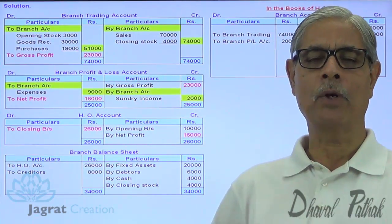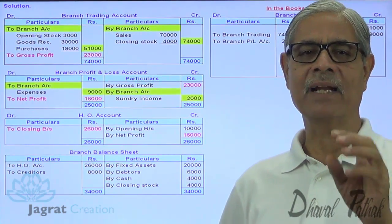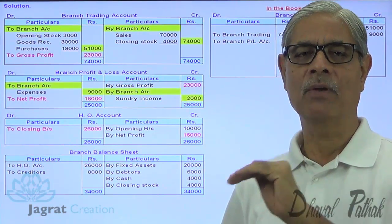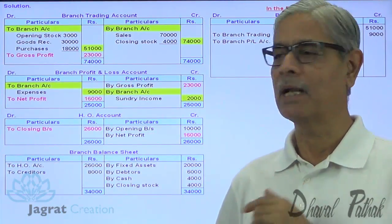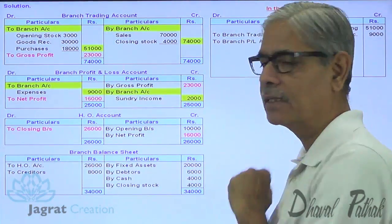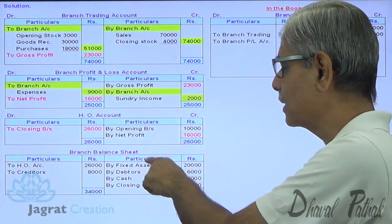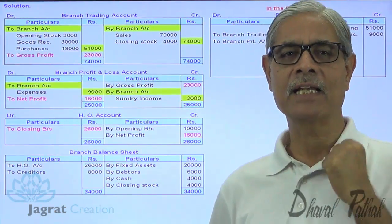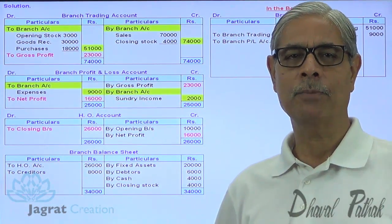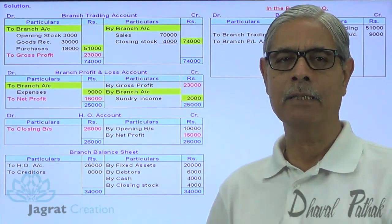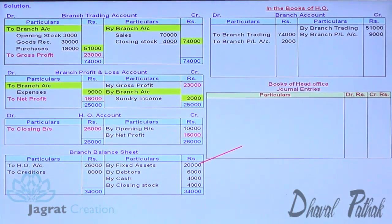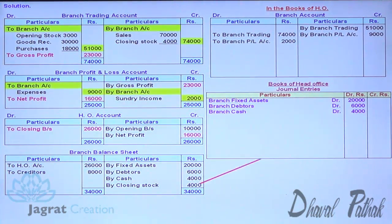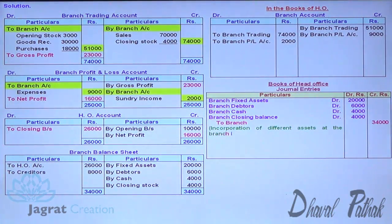When reporting the balance sheet, you can't write recoverable amount from branch or amount payable to branch anywhere. That's why the 26,000 balance represents assets and liabilities. All assets are assumed by the head office — fixed assets account debit, debtors account debit, cash account debit, stock account debit — and branch is the giver, so branch account is to be credited for that.